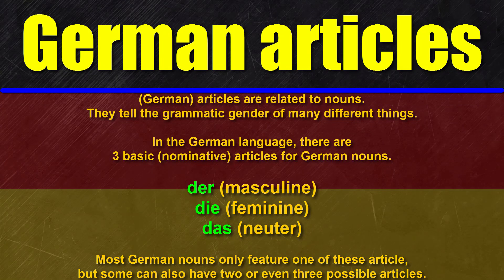Before I go into detail about the learning aid itself, let's talk about some basic information regarding German articles first. Articles belong to nouns, and there are three standard singular German articles in the German language: der for masculine nouns, die for feminine nouns, and das for neuter nouns. The first good and easy thing about German articles is that all plural forms of nouns always feature the plural article die.